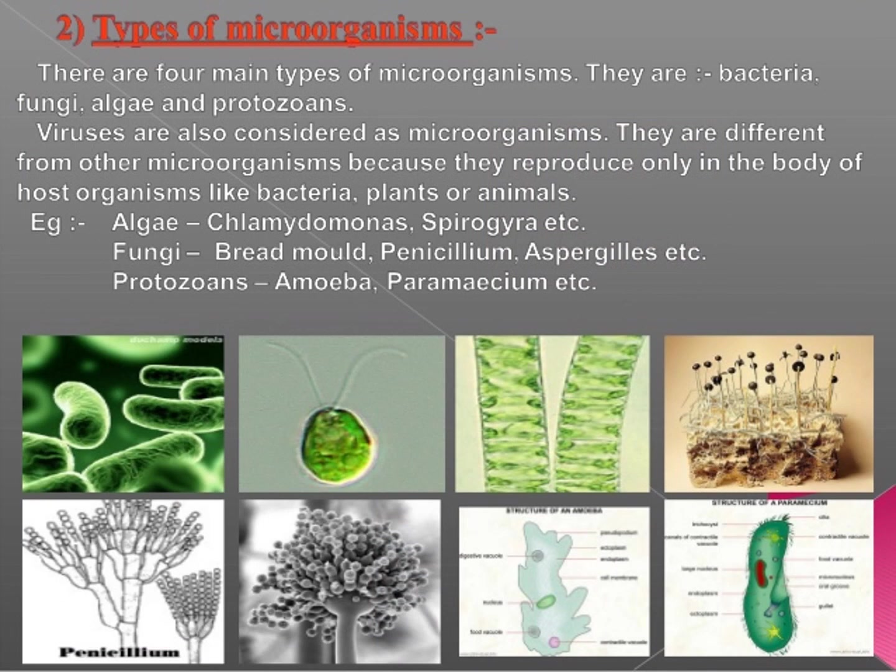Types of microorganisms: microorganisms can be broadly classified into four types. They are algae, fungi, protozoans, and bacteria. Here are some examples. Algae like Chlamydomonas, Spirogyra, etc. Fungi like bread mold, Penicillium, Aspergillus.